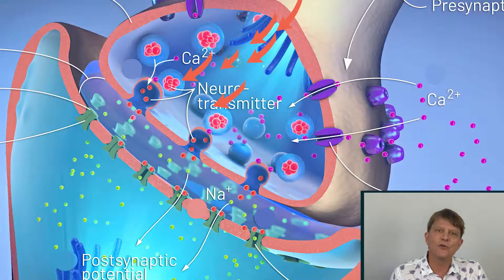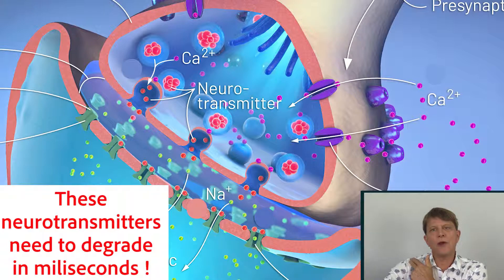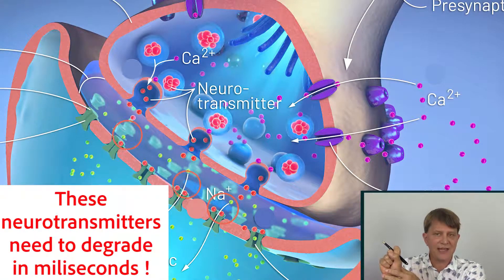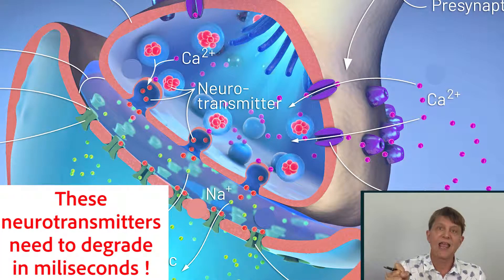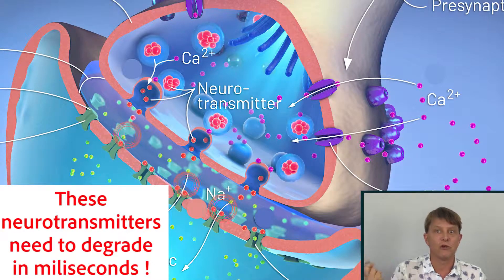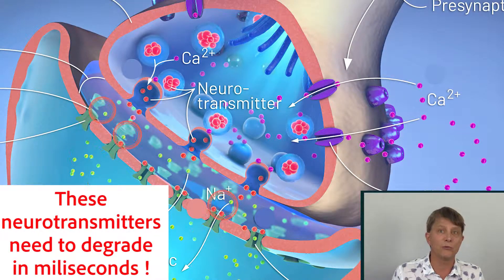Another thing to remember is that you have to be able to degrade that neurotransmitter almost immediately. For example, if a peripheral nerve was instructing the hand muscles and the neurotransmitter acetylcholine was telling those muscles to contract, if you weren't able to degrade that acetylcholine really quickly, your hand muscle would be constantly contracted. For the respiratory system, you need to relax, contract, relax, and contract — so those neurotransmitters must be degraded very quickly.